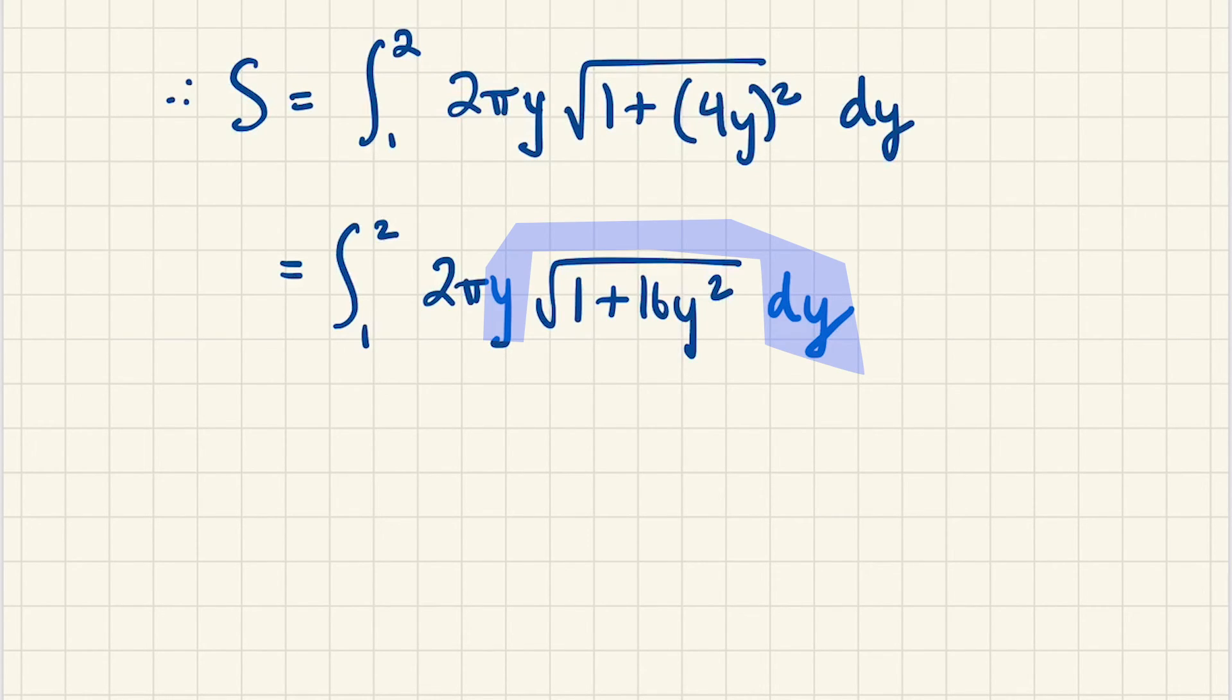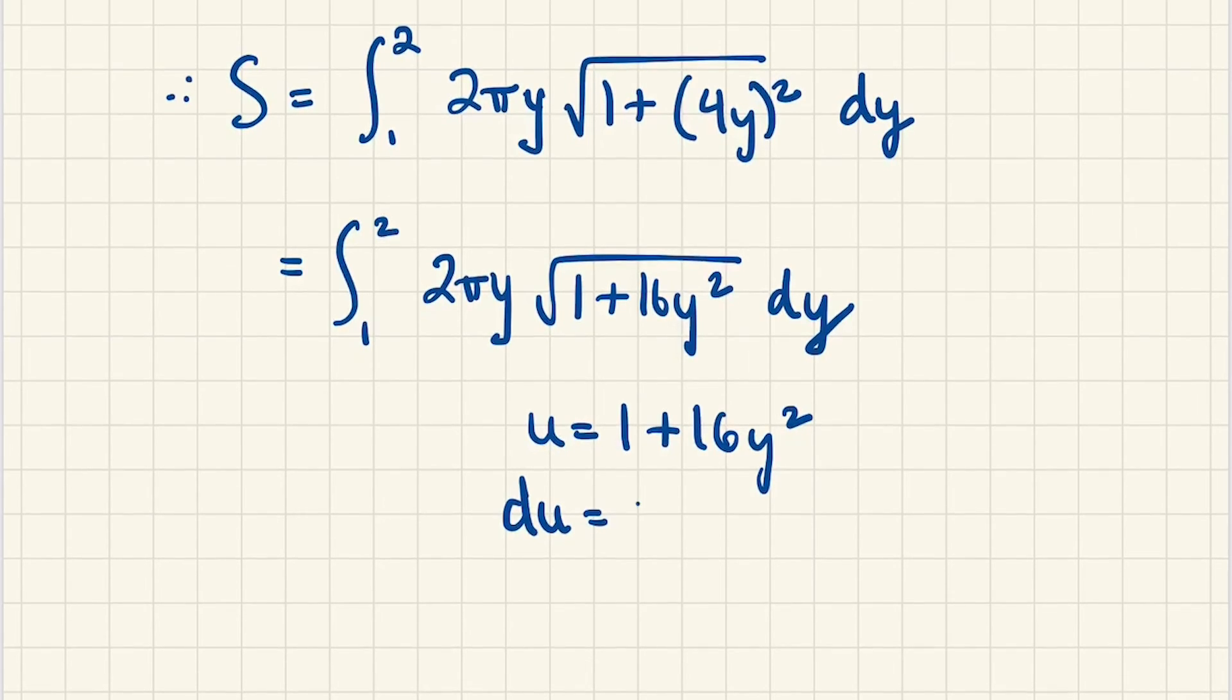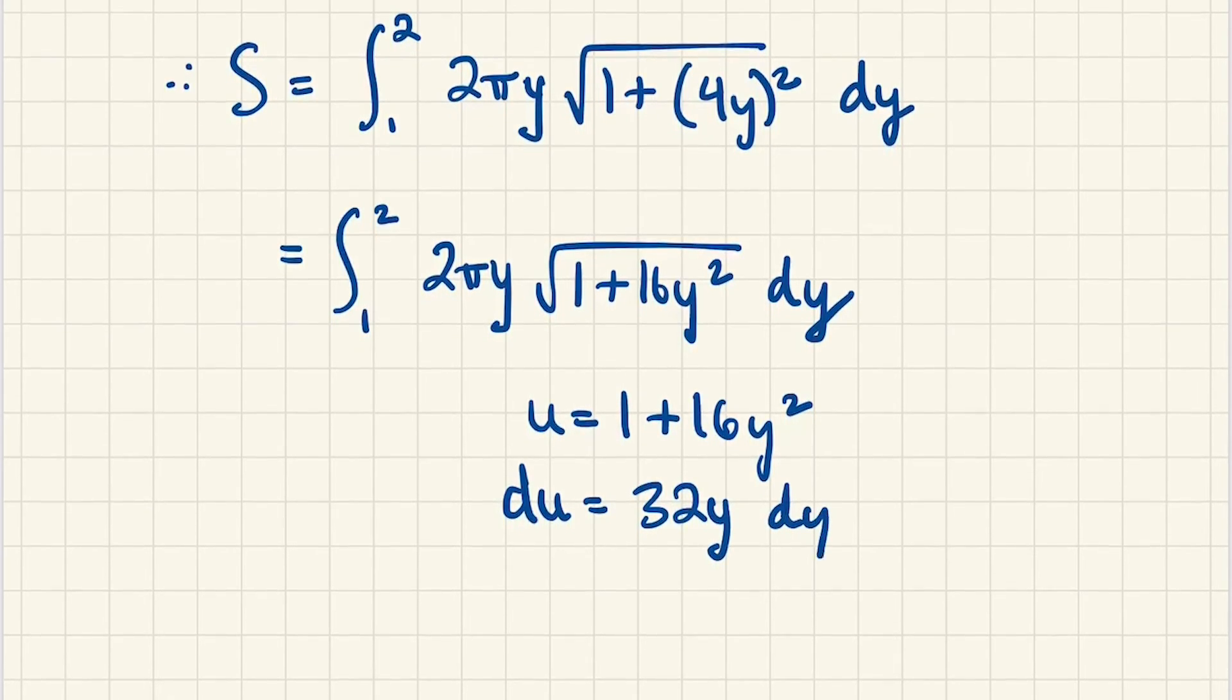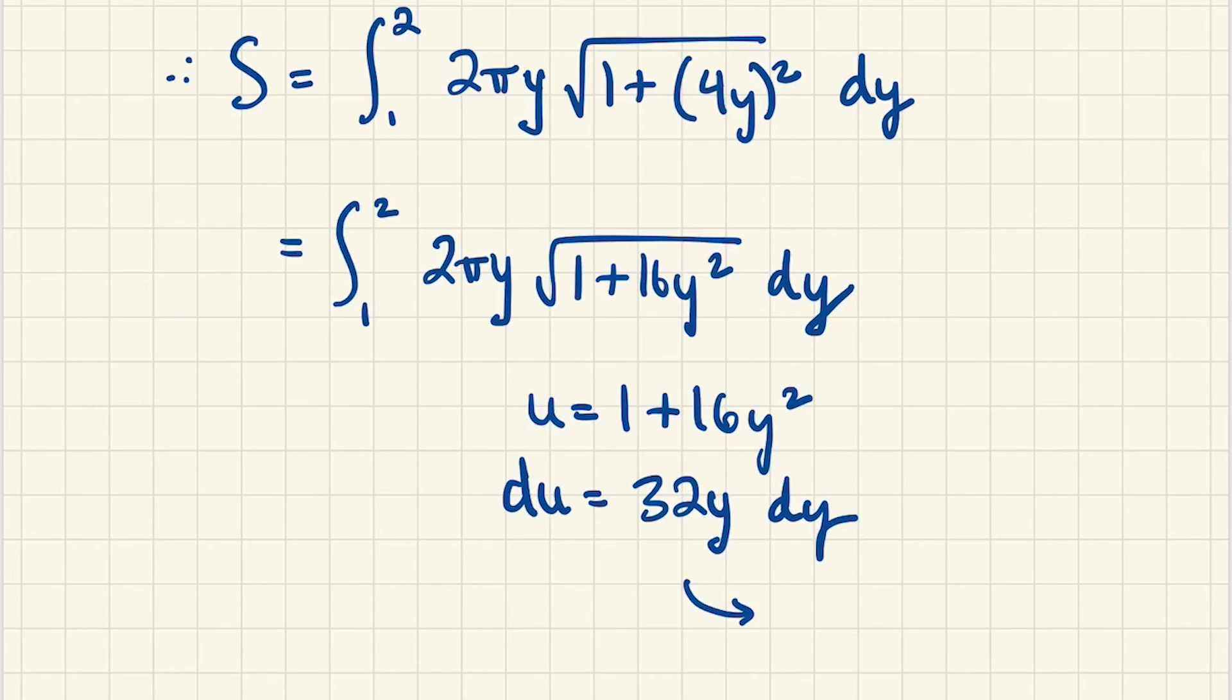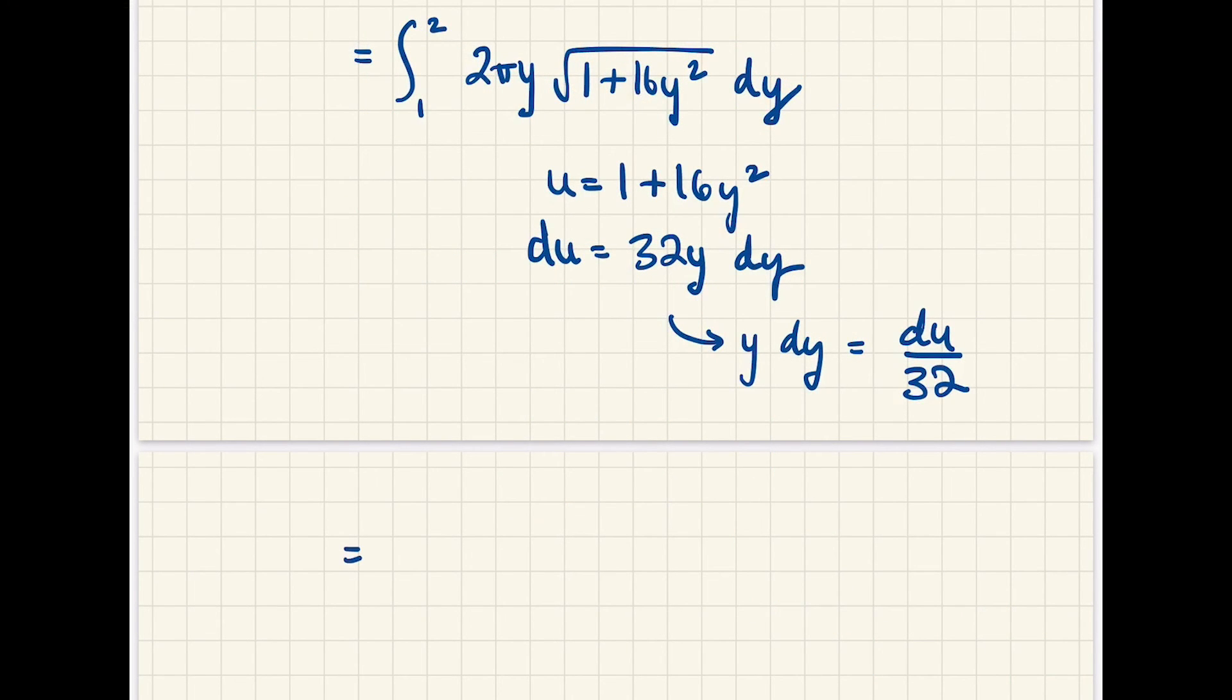So u is 1 plus 16 y squared. Our du is 32 y dy, so this means that y dy is du over 32. So our integral is now 2 pi times y dy, so that's du over 32, and we have just the square root of u.